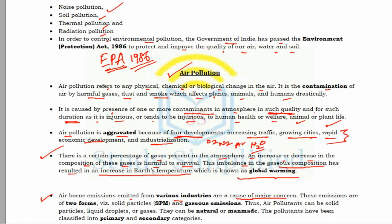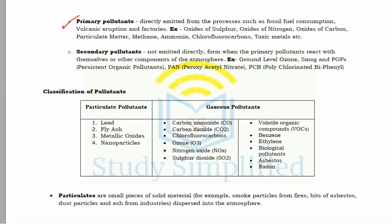Airborne emissions from various industries are a major cause of concern. These emissions are of two forms: SPM (solid suspended particulate matters) and gaseous emissions. Air pollutants can be solid particles, liquid droplets, or gases, and they can be natural or man-made. Primary pollutants are directly emitted from sources such as fossil fuel combustion, volcanic eruptions, and industrial emissions — including oxides of sulfur (SOx), oxides of nitrogen (NOx), oxides of carbon (COx), particulate matter, methane, ammonia, CFCs, and toxic metals.